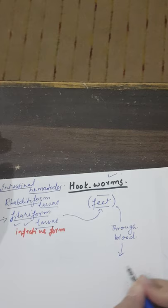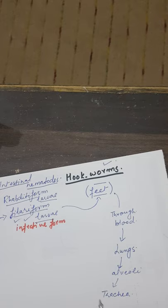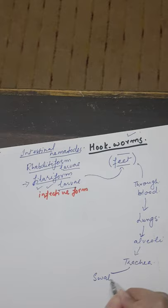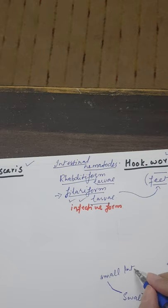Through the blood, the filariform larvae reach the lungs. From the lungs, they move through the bronchi and alveoli, traveling up to the trachea and into the oral cavity, where they are swallowed. The larvae then reach the small intestine.